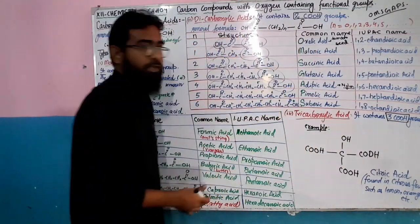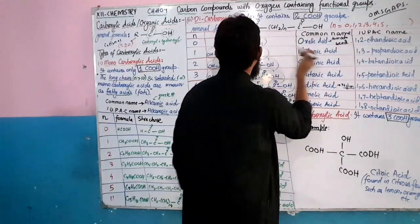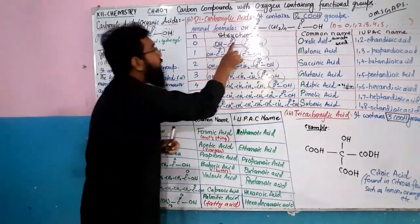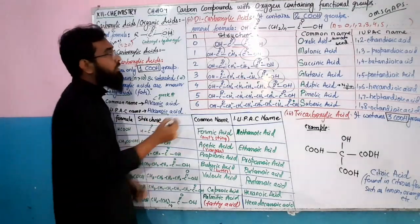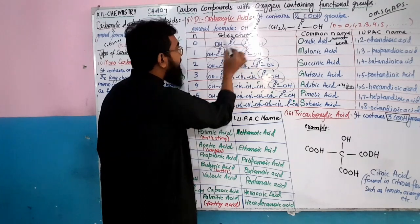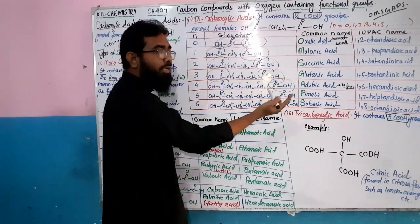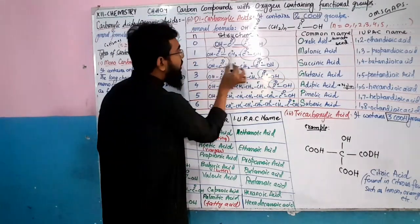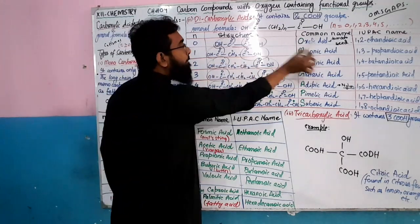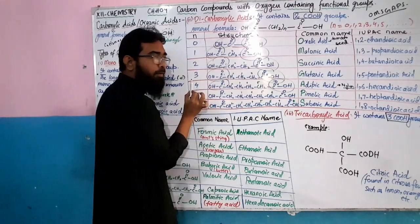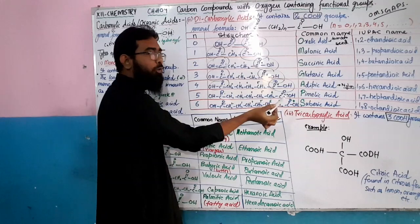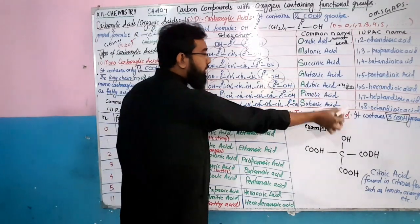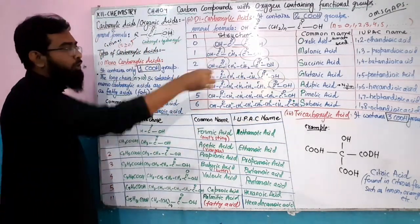For IUPAC naming of dicarboxylic acids: oxalic acid is ethanedioic acid (2 carbons), the next is propanedioic acid, then butanedioic acid (1,4 carbon), pentanedioic acid (1,5), hexanedioic acid (1,6), heptanedioic acid (1,7), octanedioic acid (1,8). The pattern is simple — you don't need to memorize all the IUPAC rules. For intermediate level, knowing oxalic acid as ethanedioic acid is sufficient.